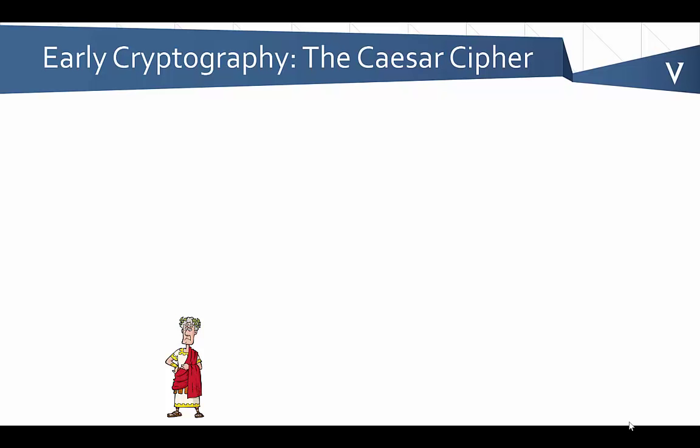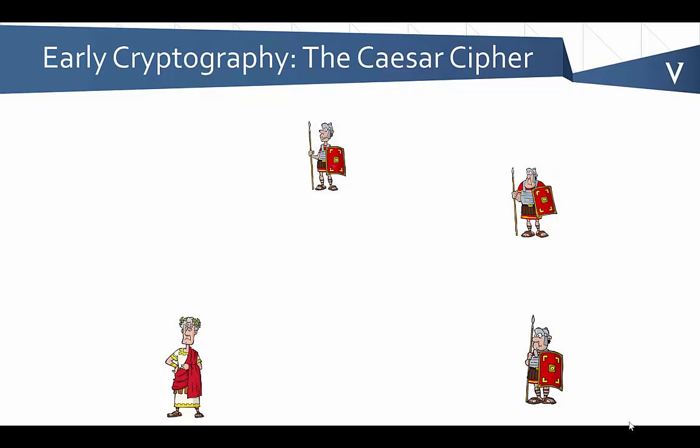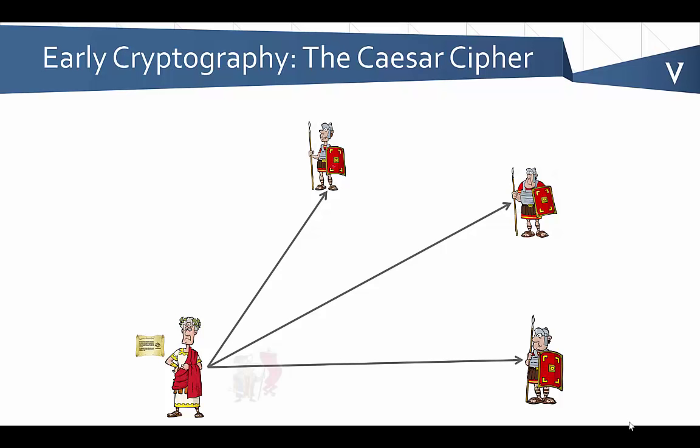Julius Caesar was a brilliant military strategist. In all seriousness, when he wanted to communicate a message to his field generals who would be in other parts of the world, or at least other parts of Europe, he would have a messenger and even one or more guards that would go with that messenger to protect the delivery of the message. But he still had the risk of somebody intercepting the message, and that could really impact the military strategies that he was trying to execute.